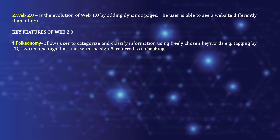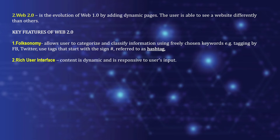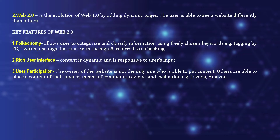The Web 2.0 key features are: first, folksonomy, which allows users to categorize and classify information using freely chosen keywords — for example, tagging on Twitter using hashtags. Next is the rich user interface, where content is dynamic and responsive to user input — for example, a social networking site that shows local content based on your logged-in account. Then there is user participation, where not only the website owner but others can also post content through comments and reviews — examples include Lazada, Amazon, Shopee, and Shein.